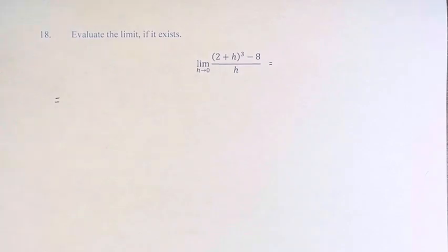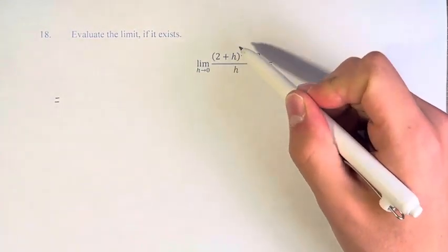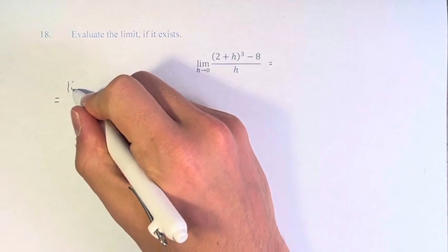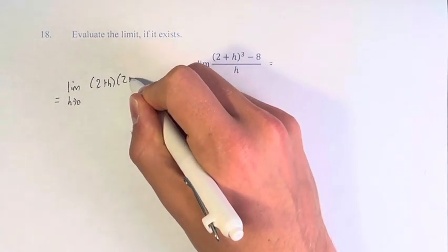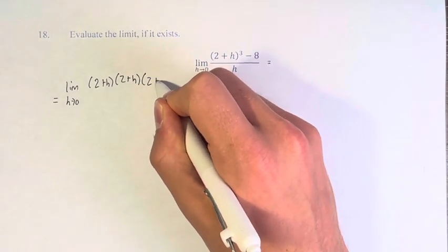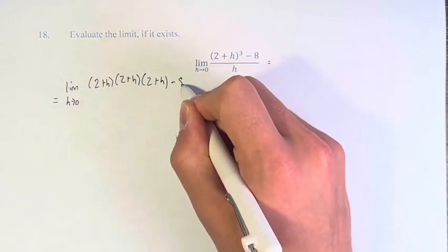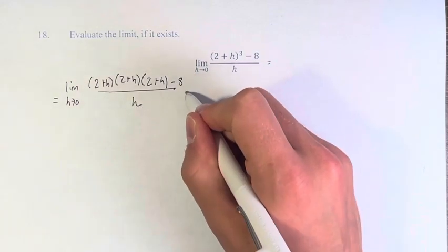So what we have here is (2+h)³, right? So we're going to write that as (2+h) times (2+h) times (2+h) minus 8 divided by h.